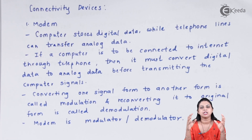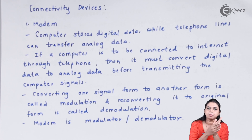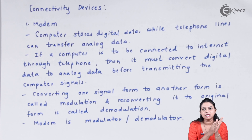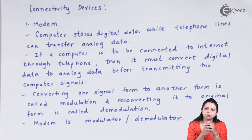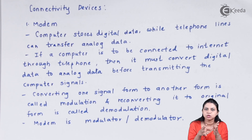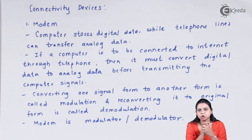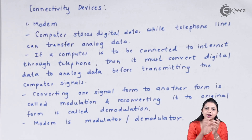Suppose I am connecting computer A with computer B via a telephone line. Computer A will transfer data in the form of binary data. That binary data will get passed along the telephone line, but the telephone line will not understand the binary data. So it needs to convert that digital data into analog data — modem does that. When it goes to computer B, that analog data gets converted back into digital data, and this process is called demodulation.